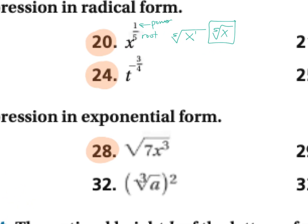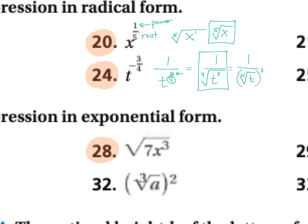Number 24 is T to the negative three fourths power. We don't want negative exponents, so when you see the negative you're going to flip it: one over T to the positive three fourths. Now you can think of it as a radical — the power is three, so T to the third power, and the root is the index, so take the fourth root of that. You can write it either way; they're the same thing. I like the simpler form, but that's up to you.